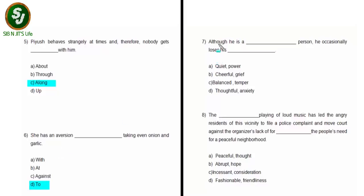The next example: 'Although he is a ___ person, he occasionally loses his ___.' We have two blanks so both words must perfectly fit. Option A: 'quiet' and 'power' — when you are quiet you cannot lose your power, not matching. Option B: 'cheerful' and 'grief' — not fitting either, this is also wrong. Option C: 'balanced' and 'temper' — you can be a balanced person and sometimes lose your temper. Option D: 'thoughtful' and 'anxiety' — no. The correct option is C: 'Although he is a balanced person, he occasionally loses his temper.'